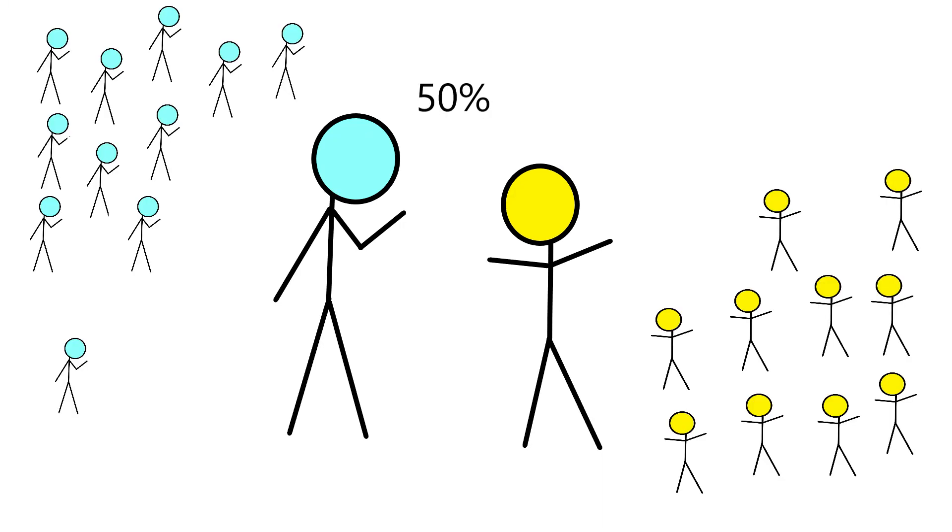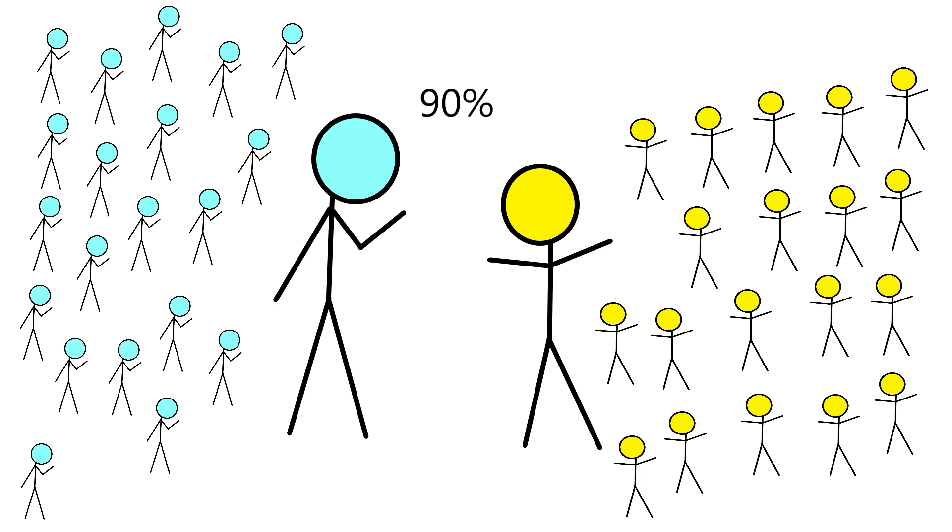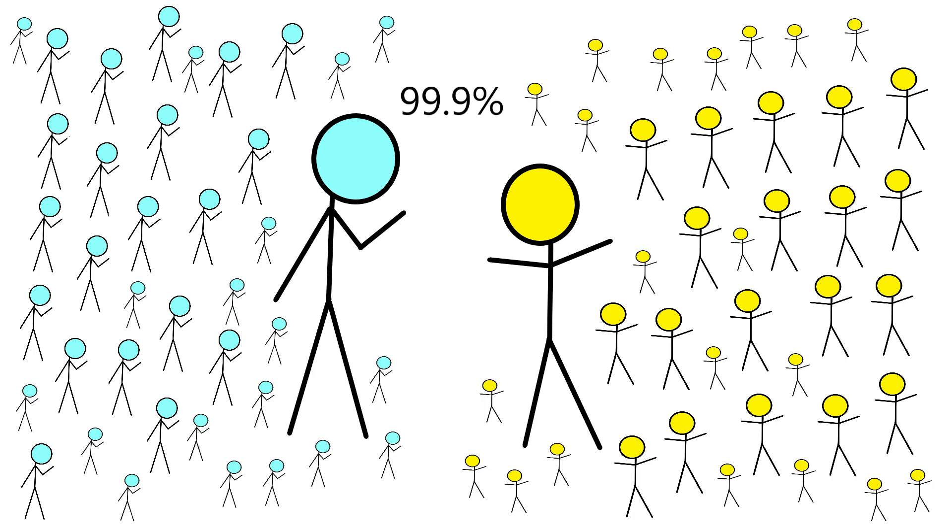That's less than a 0.3% chance. But believe it or not, it only takes 23 people in a room for there to be more than a 50% chance that two of the people in that room share a birthday. In fact, if there's 41 people in the room, there's more than a 90% chance that two of them have the same birthday. And it only takes 70 people for there to be a more than 99.9% chance that two of them have the same birthday.